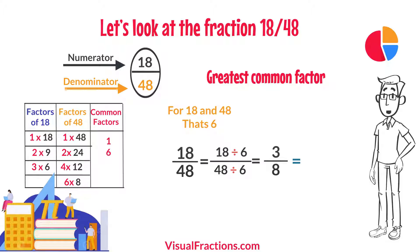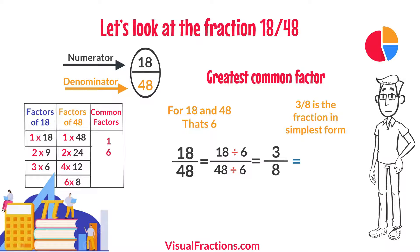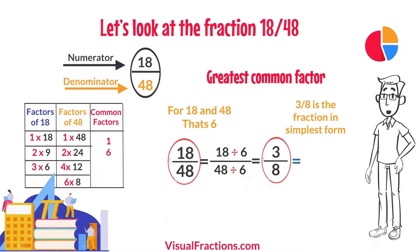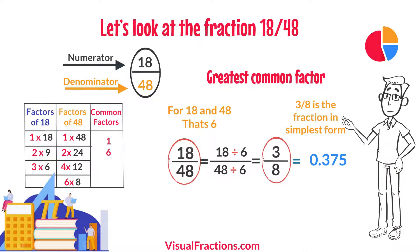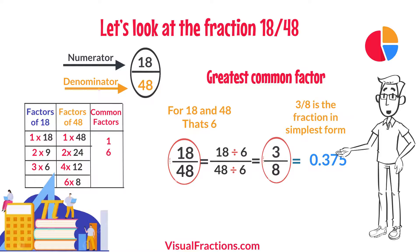So simplifying 18/48, we end up with 3/8, which is the fraction in its simplest form. It's important to note that both the original fraction 18/48 and the simplified fraction 3/8 have the same decimal value, which is 0.375. This demonstrates that simplifying a fraction does not change its inherent value, but makes it easier to understand and use.